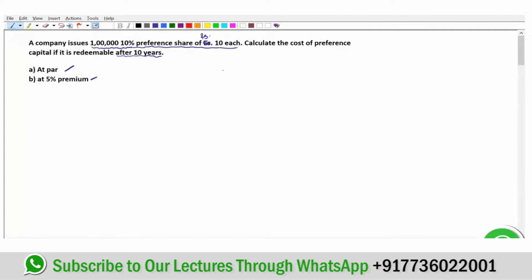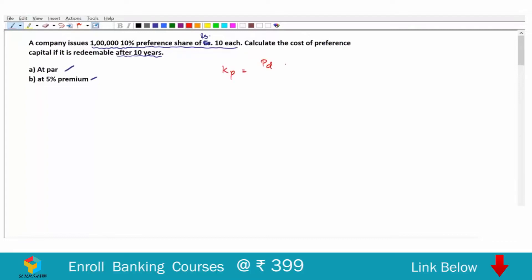the formula for finding the cost of preference? We say Kp is equal to Pd plus RV minus NP divided by N, whole divided by RV plus NP by 2, multiplied by 100.